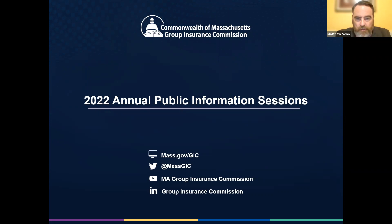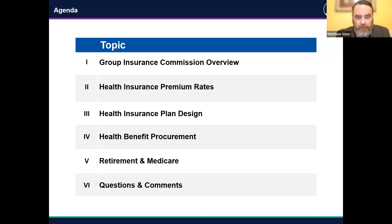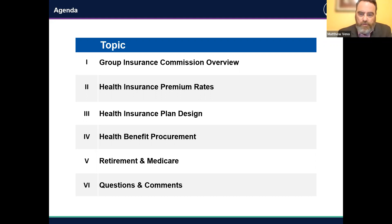To start, I want to quickly review the agenda. First we will review some basics about the GIC as a refresher for long-time members and an introduction for new members. We'll then move on to health insurance premium rates, briefly explaining our process, timeline, and what we anticipate rates will look like for the upcoming year. Next we'll discuss the one proposed change to our health insurance plan design, then transition to a review of the upcoming health benefit procurement. The presentation will wrap up with an overview of retirement and Medicare from GIC's Director of Operations Paul Murphy, and we'll then open it up for questions.